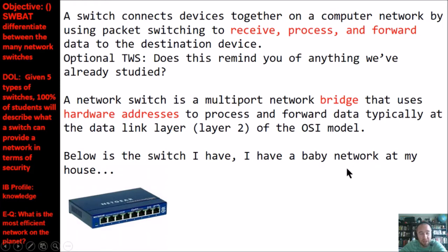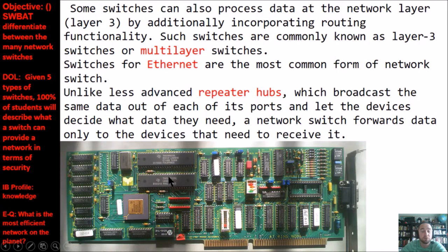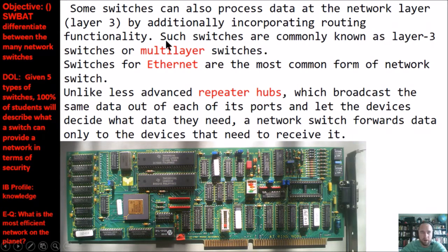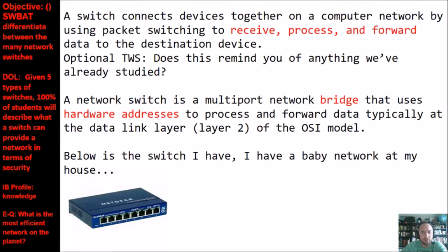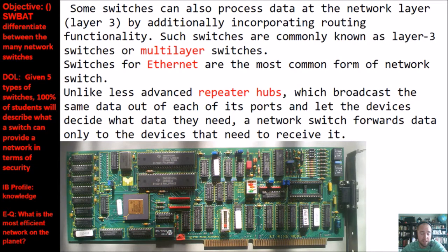I have a pretty small home network, but this is the exact switch I'm using at home. Some switches can process data at the network layer, which is Layer 3, but if it's on this layer it's additionally incorporating router functionality. So some switches can also be routers, commonly known as Layer 3 switches or multi-layer switches. The switch I'm using at home is a Layer 2 switch — my router is a separate piece of hardware.